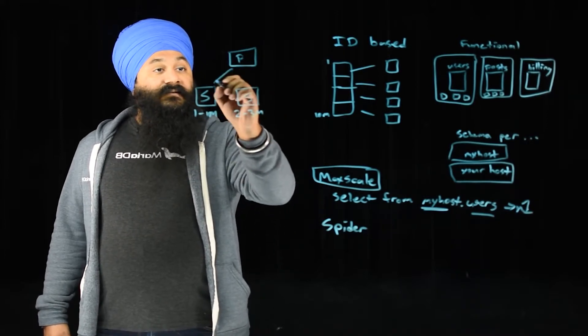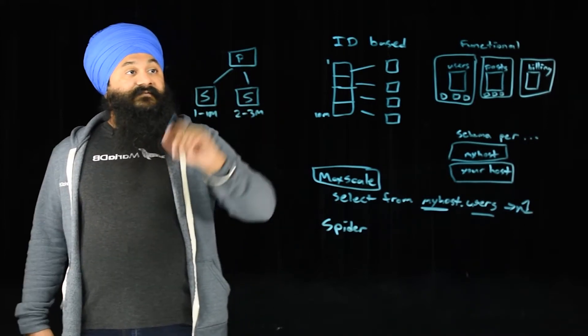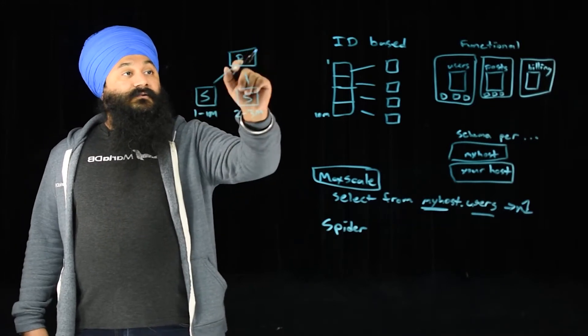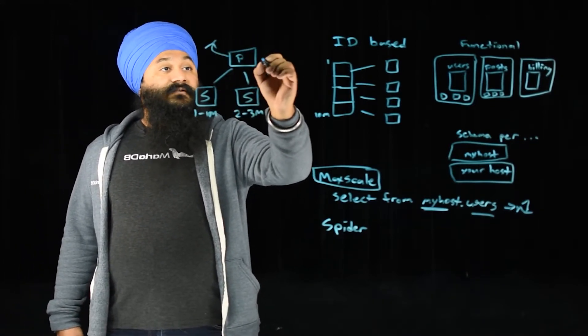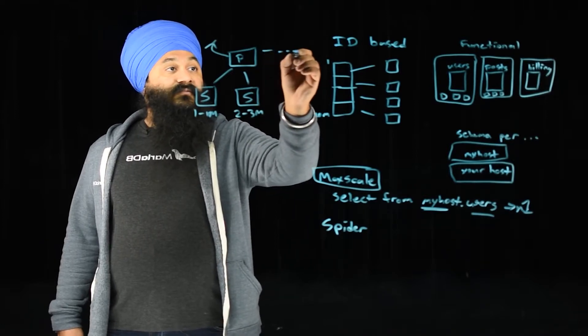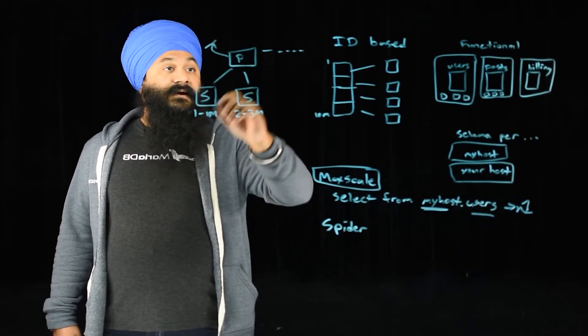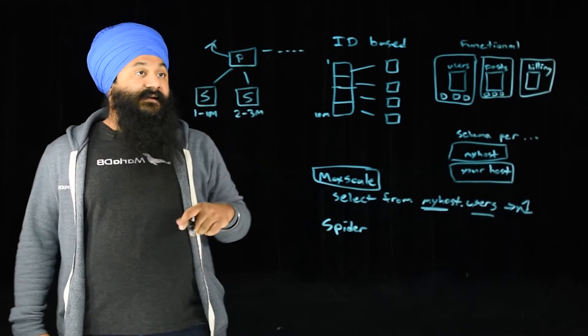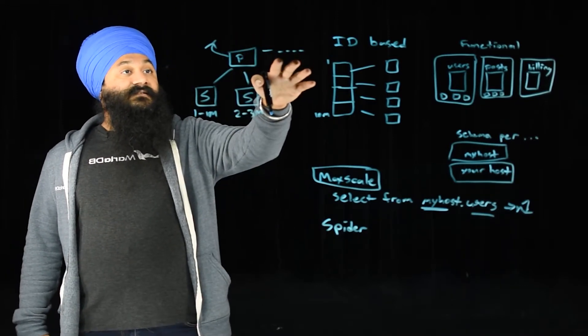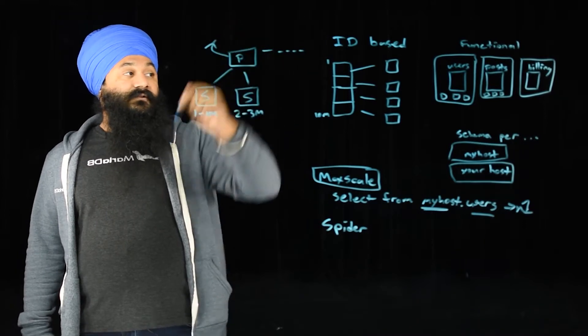And what Spider does is it will go down in a parallel fashion, pull the data, join it, and then return it. And it can actually join on other storage engines. So let's say you have other smaller tables on this primary. That Spider table will actually pull from all of the underlying Spider data nodes, join them across these other storage engines, and return those to the user.